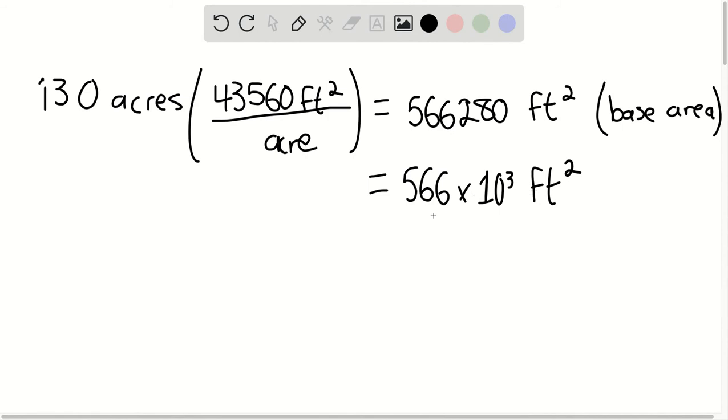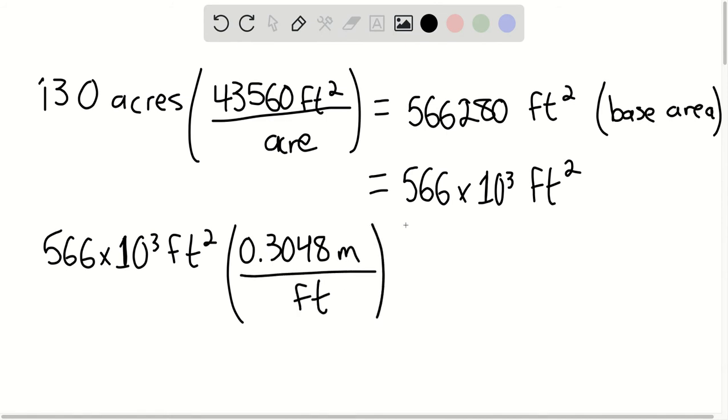We can then convert to meters squared. 566 times 10 to the third feet squared, we will multiply this by 0.3048 meters for every foot, and we're going to square the conversion factor. This is giving us approximately 52.6, again rounding to three significant figures, times 10 to the third square meters.